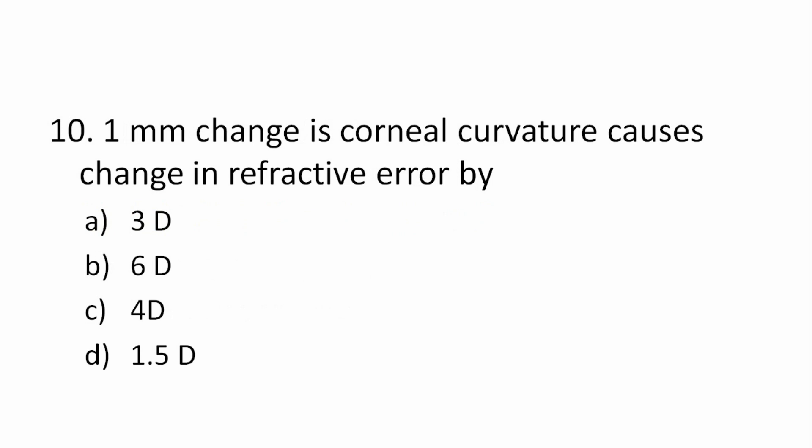Question 10: One millimeter change in corneal curvature causes change in refraction by how many diopters? Options: 3D, 6D, 4D, 1.5D. Be careful — 1mm change in axial length causes 3 diopters change, but 1mm change in corneal curvature causes double that — 6 diopters. The correct answer is 6 diopters. Be careful about what the question is actually asking.